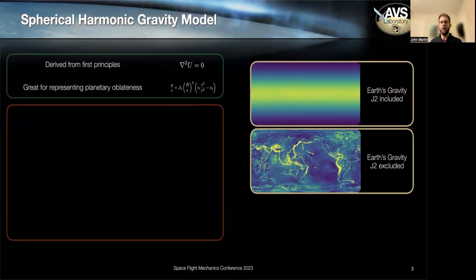So most planets and moons will have this kind of pudginess at their equator. Spherical harmonics are excellent at capturing this.